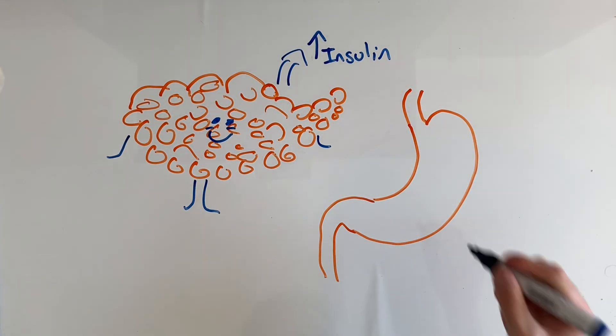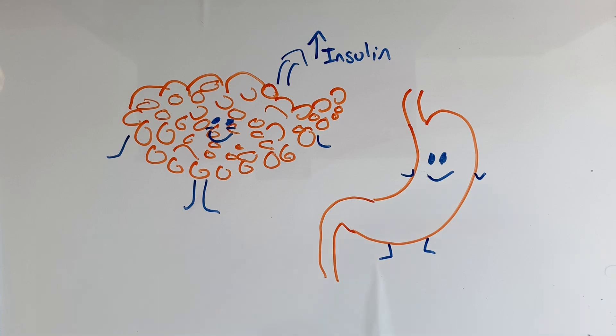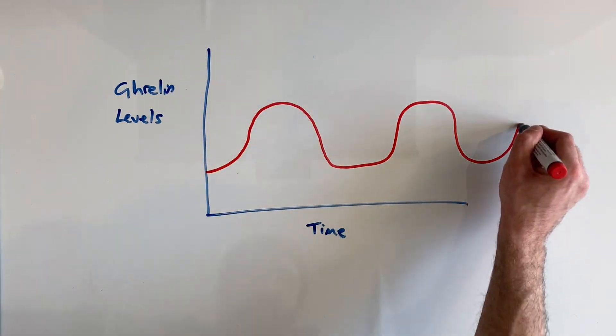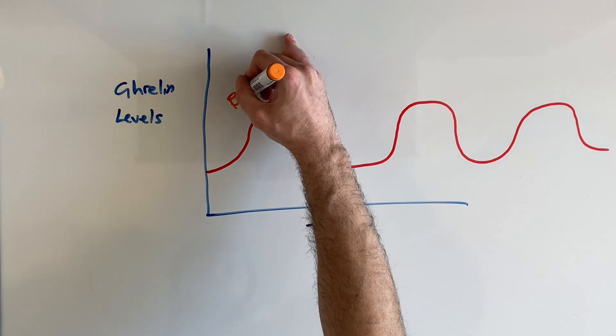In the gut, GLP-1 also impersonates a couple of very important metabolic hormones called ghrelin and leptin, and really the stars of today's video. Ozempic suppresses the release of ghrelin, which is a hormone produced by the stomach that stimulates appetite. Ghrelin levels typically rise before meals, signaling to the body that it's time to eat and fall after meals.